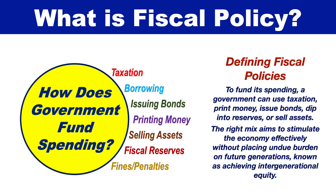To fund its spending, a government can use taxation, print money, issue bonds, dip into reserves, or sell assets. The right mix aims to stimulate the economy effectively without placing undue burden on future generations, known as achieving intergenerational equity.